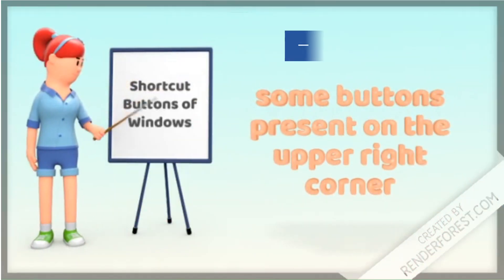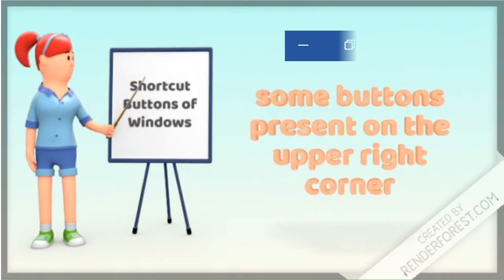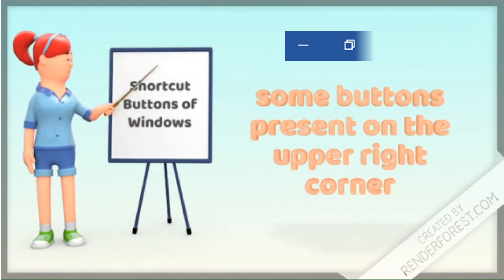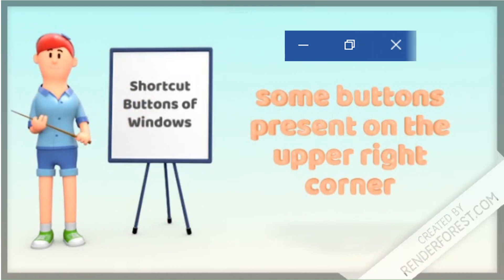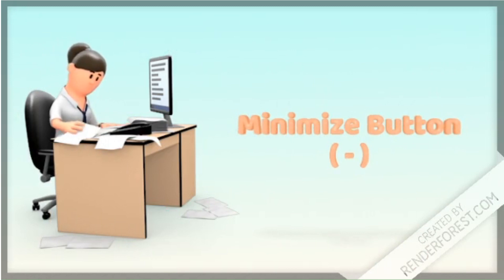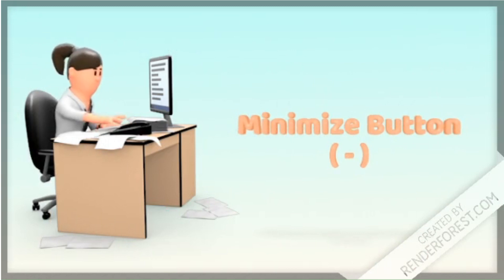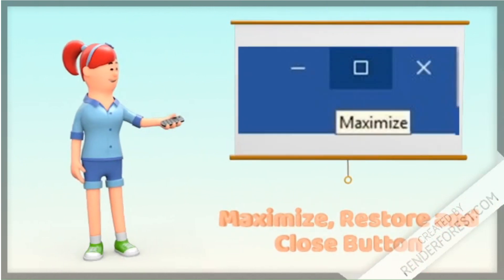Shortcut buttons of Windows: Some buttons are present on the upper right corner of an open window. The Minimize button shrinks the window to the taskbar. The Maximize button expands the window to full screen.